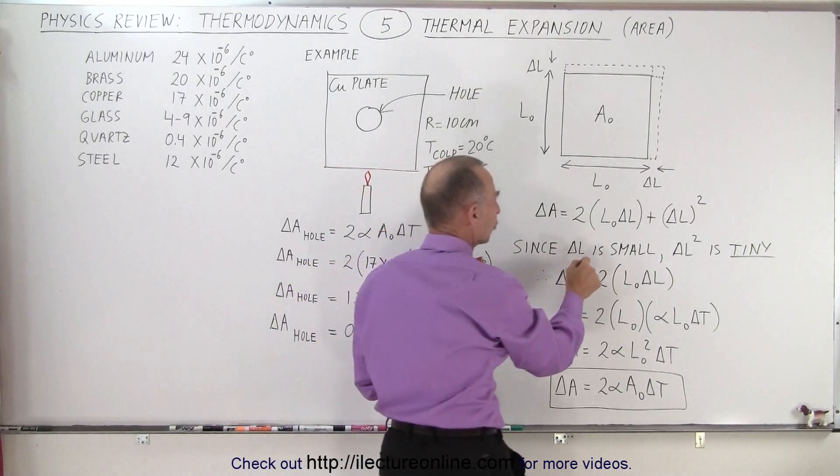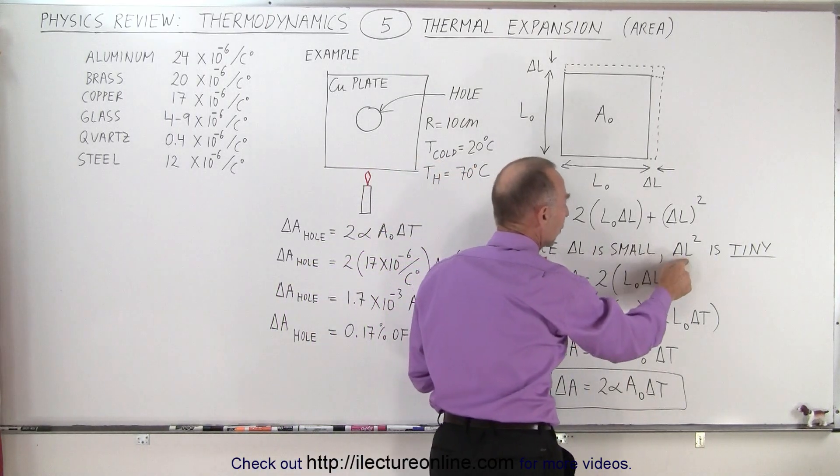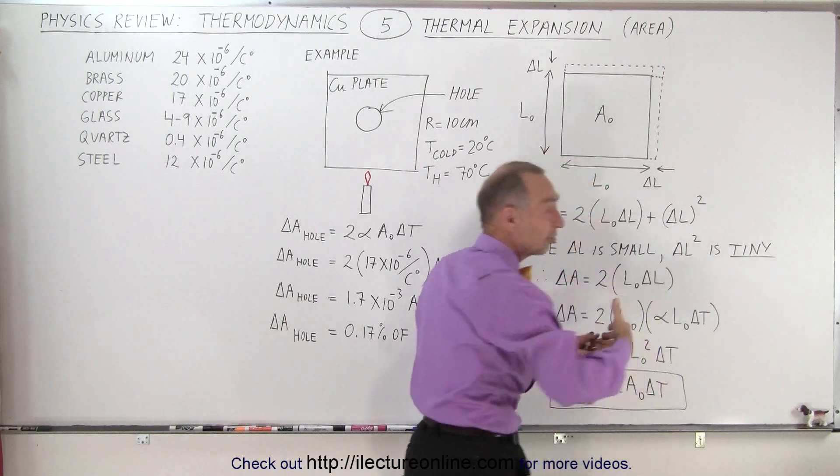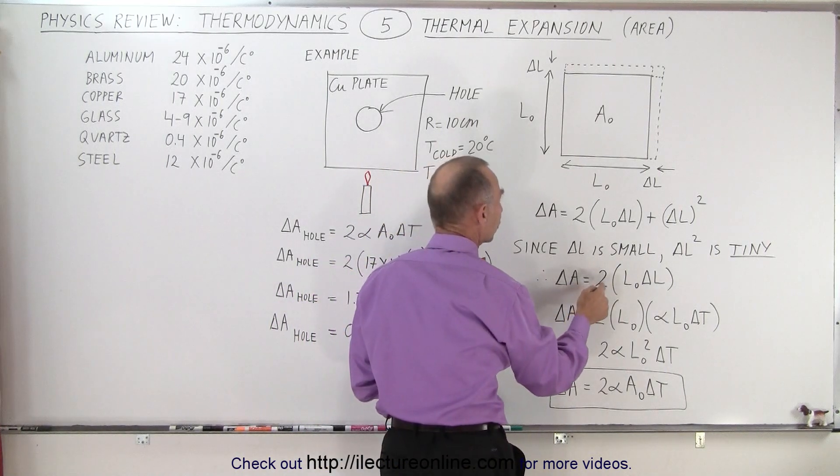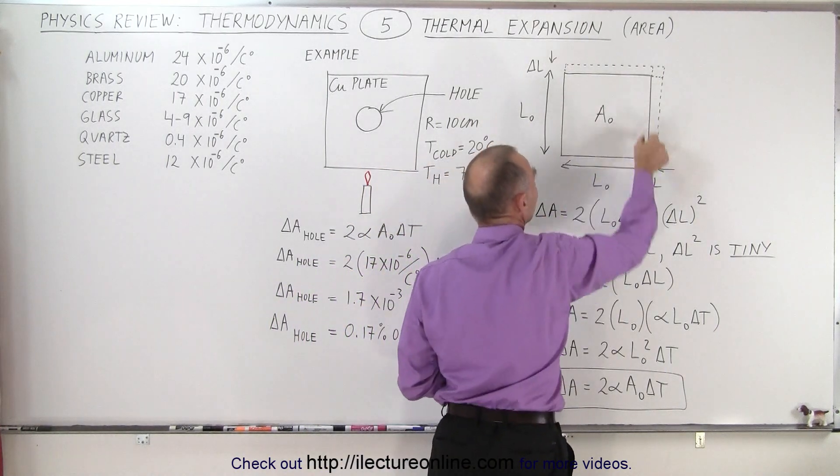Since the change in length is typically very small, when you square it, it's extremely tiny. We can ignore that piece. The change in area is simply twice the area of each of these strips.